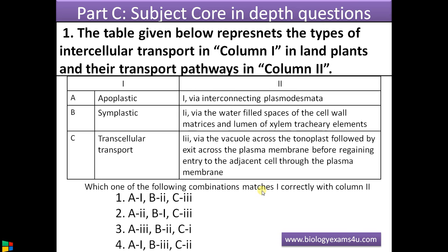If you know that 'apoplastic' means a non-living pathway, then A matches with 'via water-filled spaces of cell wall matrices and lumen of xylem tracheary elements.' 'Symplastic' means a living pathway — cell-to-cell connection via plasmodesmata — so B matches with 'via interconnecting plasmodesmata.' Looking at the options, option 1 doesn't have A2; option 2 has A2. Checking options 3 and 4 — neither has A2. So the answer narrows to option 2.